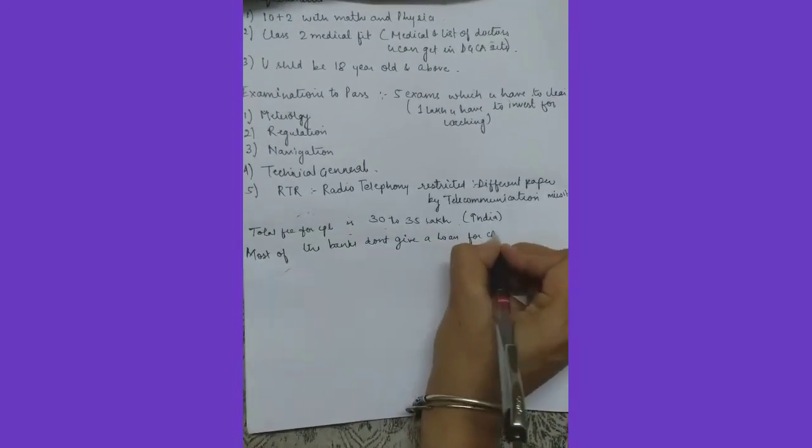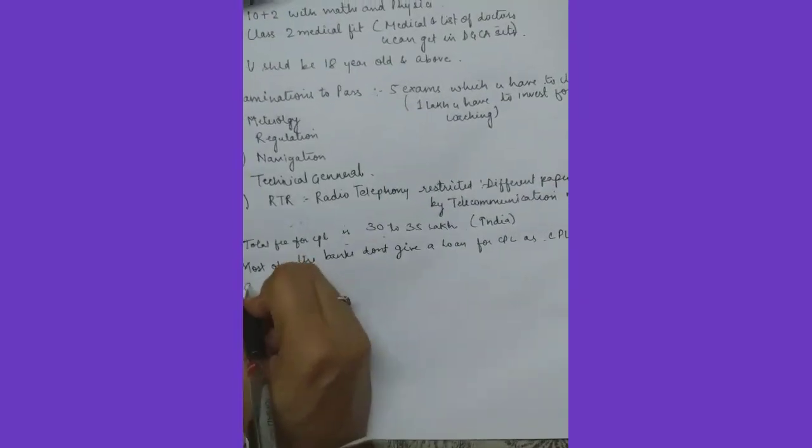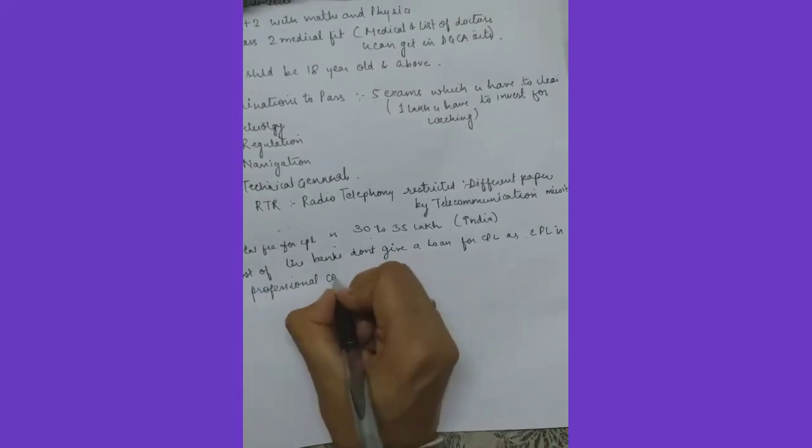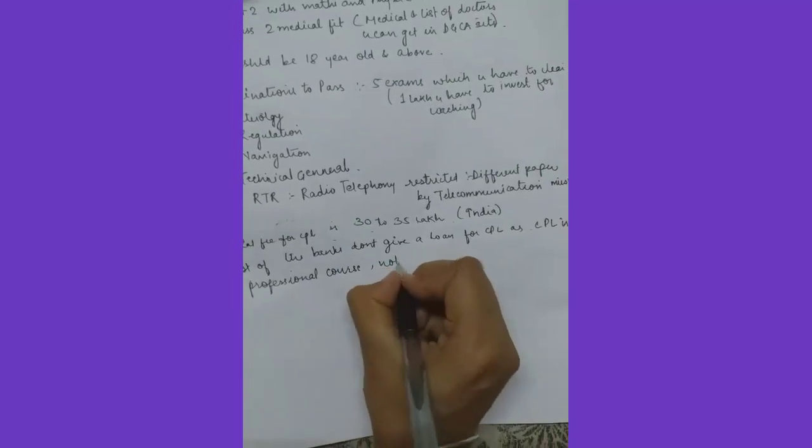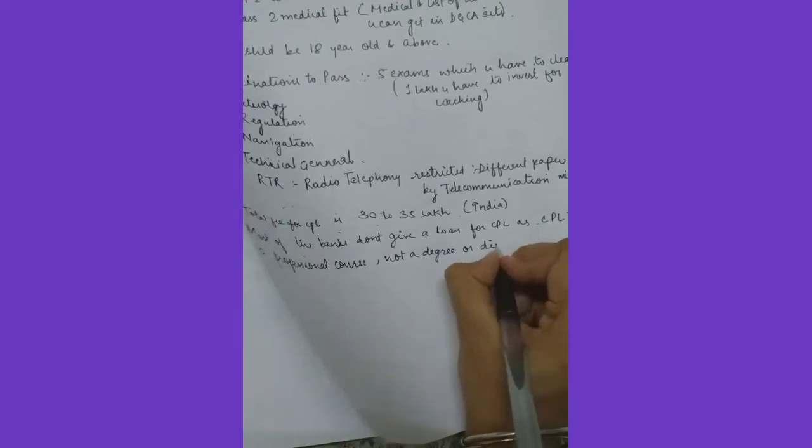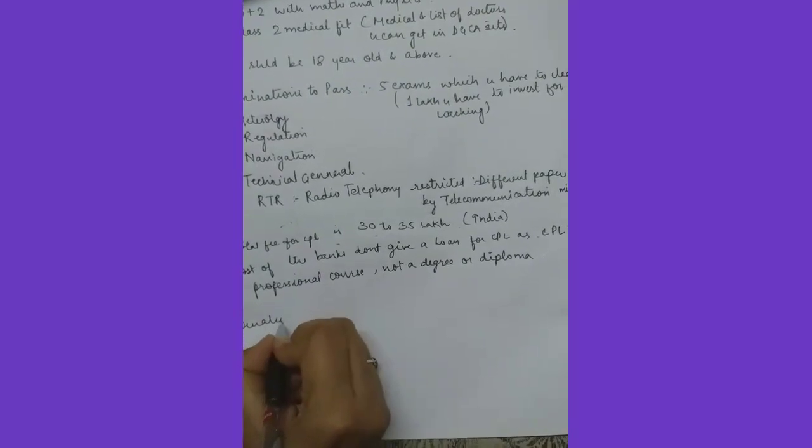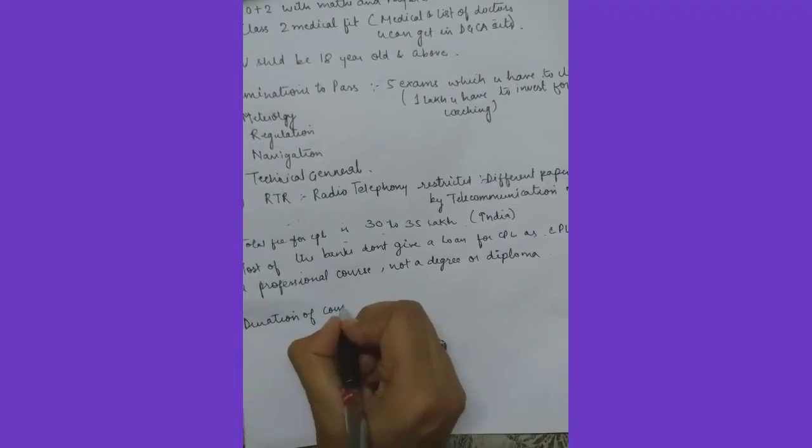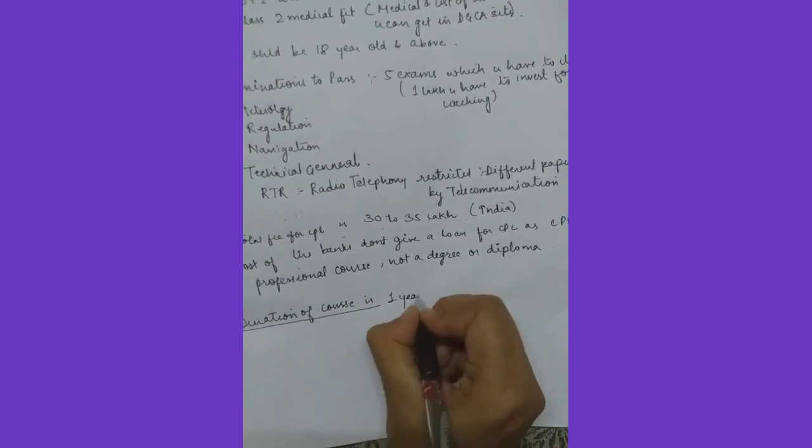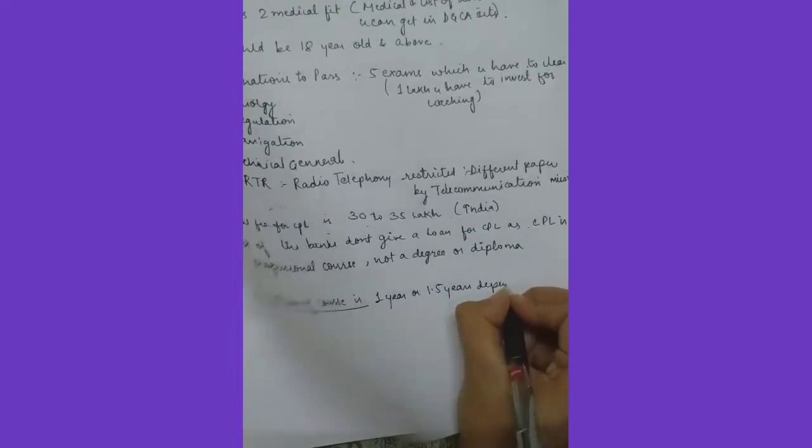For CPL, as CPL is a professional course. So don't think it's a degree, so don't think it's a degree or a diploma. It's a professional course. So duration of the course is one year or 1.5 years depending on flying school.